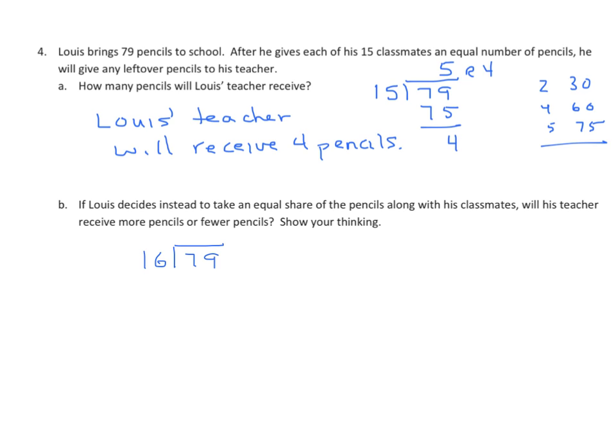I know that 5 times 16 is 80, so that's going to be too big, but it's close. So I'm going to try a 4. 4, regroup the 2, 4 times 1 is 4, 4 plus 2 is 6. And we're going to subtract and get 64. Subtracting, 9 minus 4 is 5, and 7 minus 6 is 1.